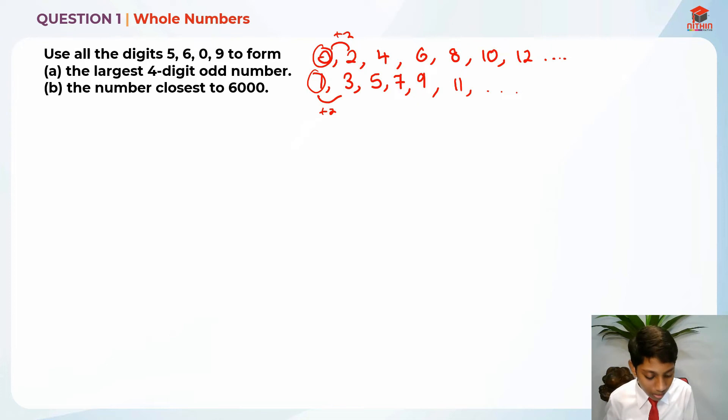They are asking for the largest 4-digit odd number. So odd numbers always end with an odd number. Perhaps 11 ends with a 1, so that's an odd number. 17 ends with a 7, odd number. 19 ends with a 9, odd number. And even numbers always end with an even number at the last digit. So imagine 24, even number. 46, even number. 88, even number. So all of these are just random examples of odd and even numbers.